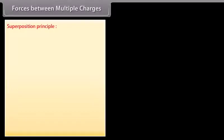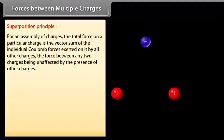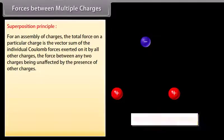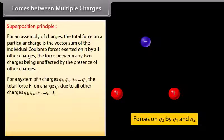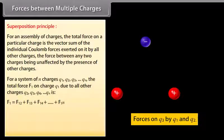Forces between multiple charges — Superposition principle: For an assembly of charges, the total force on a particular charge is the vector sum of the individual Coulomb forces exerted by all other charges, with the force between any two charges unaffected by the presence of others. For a system of n charges, the total force on q₁ is F₁ = F₁₂ + F₁₃ + F₁₄ + ... + F₁ₙ.